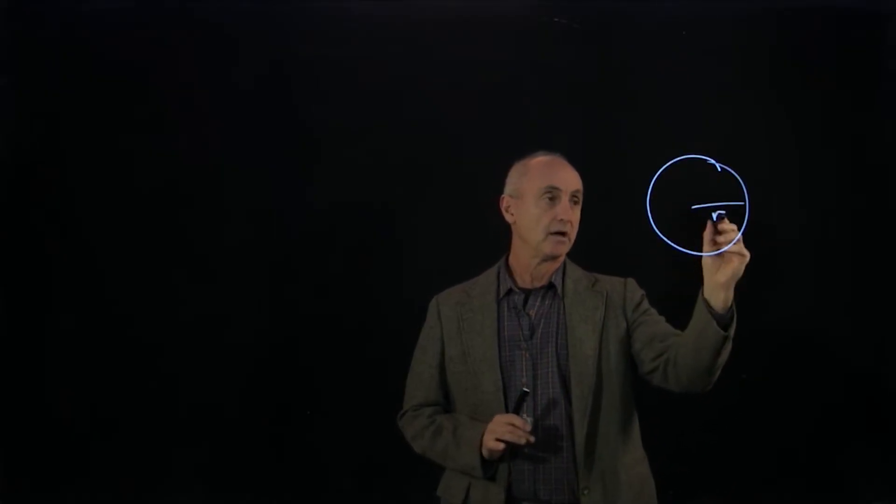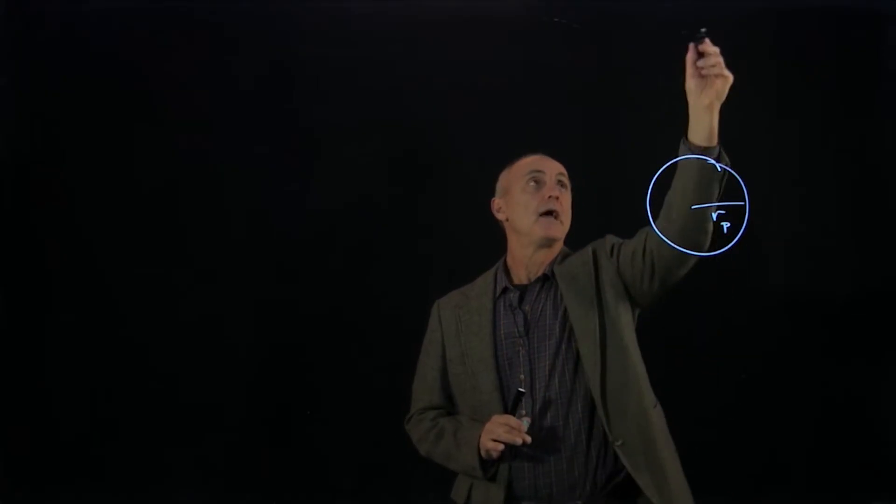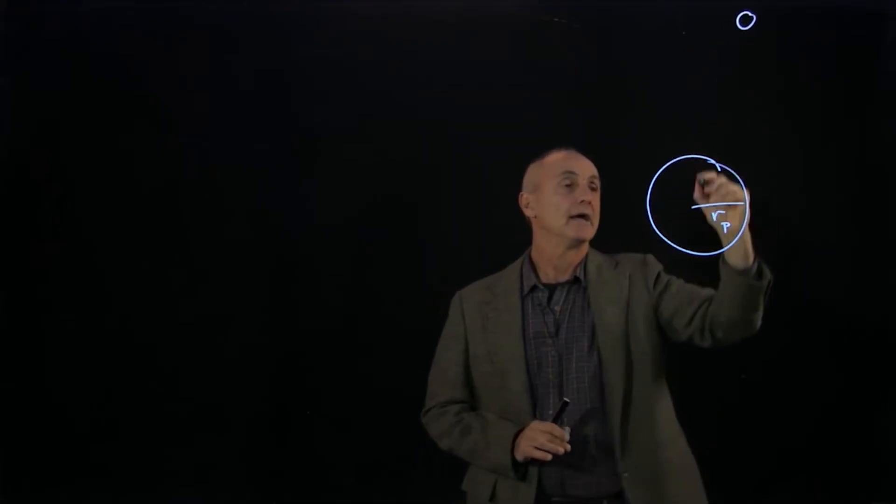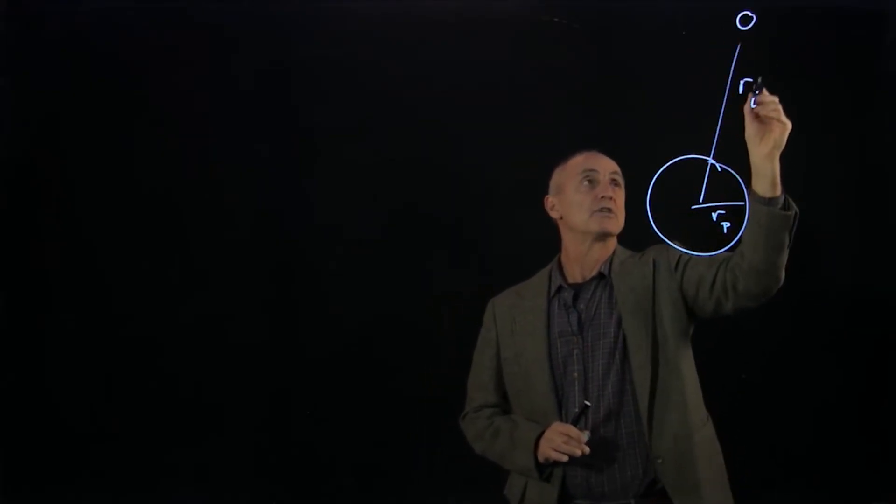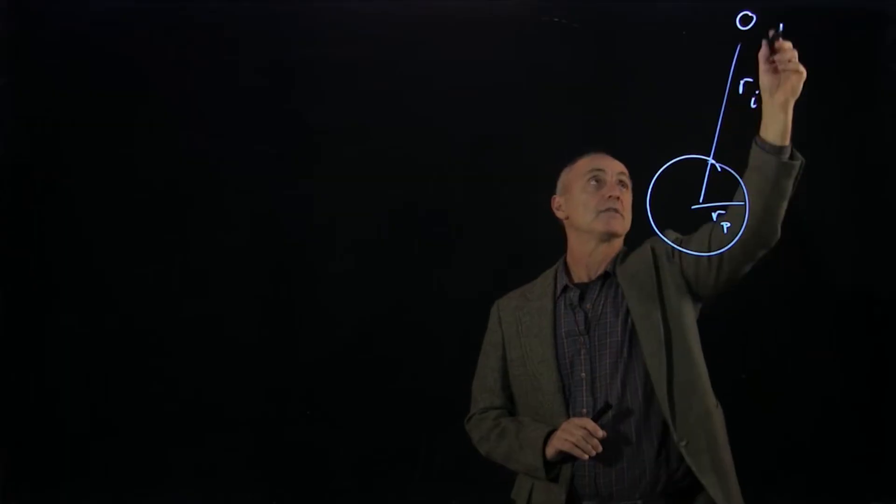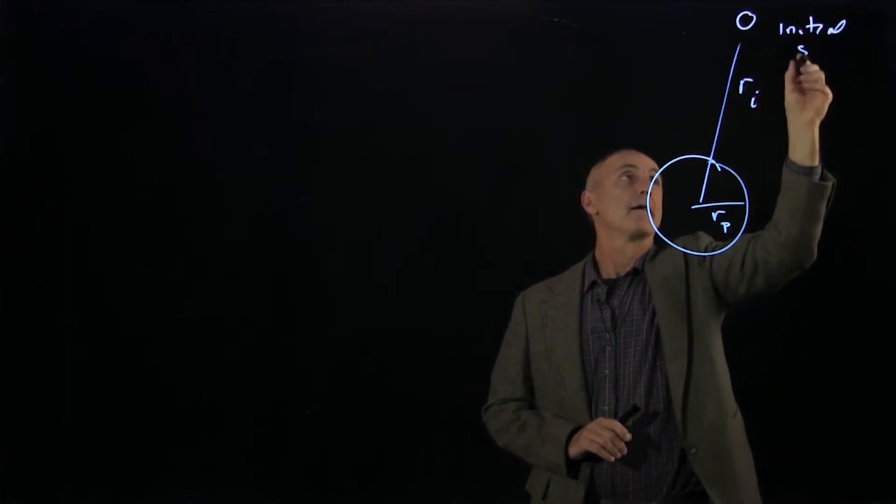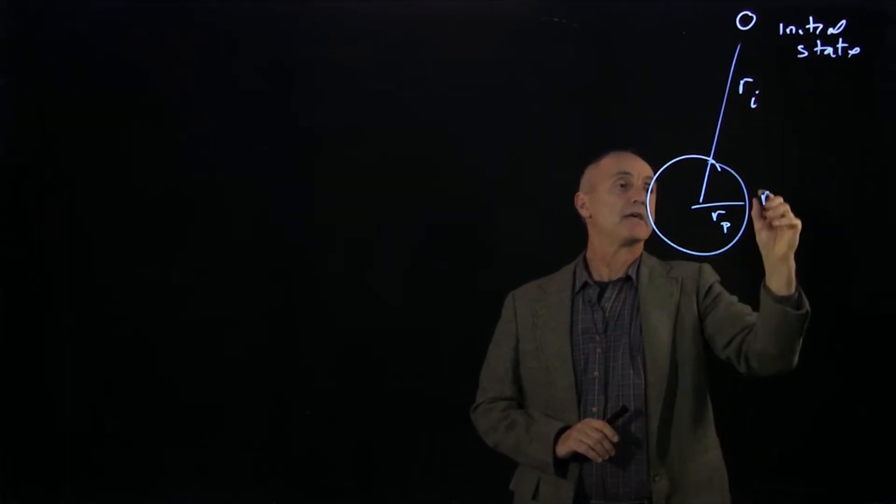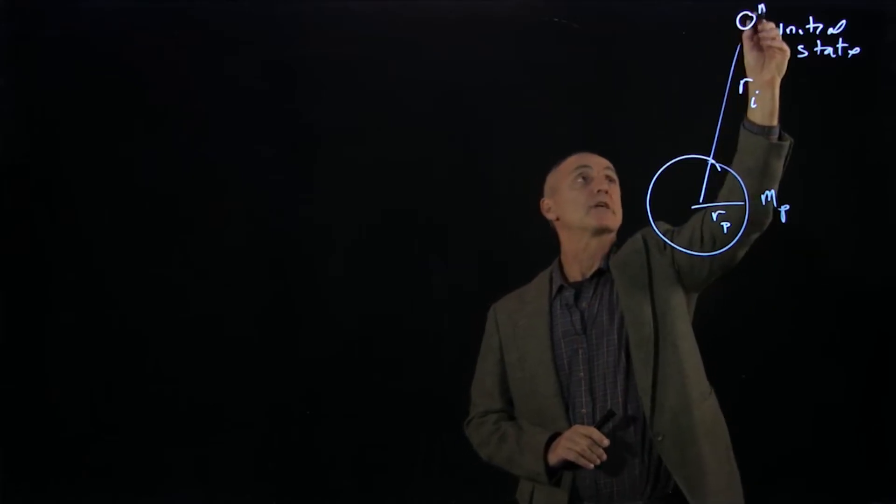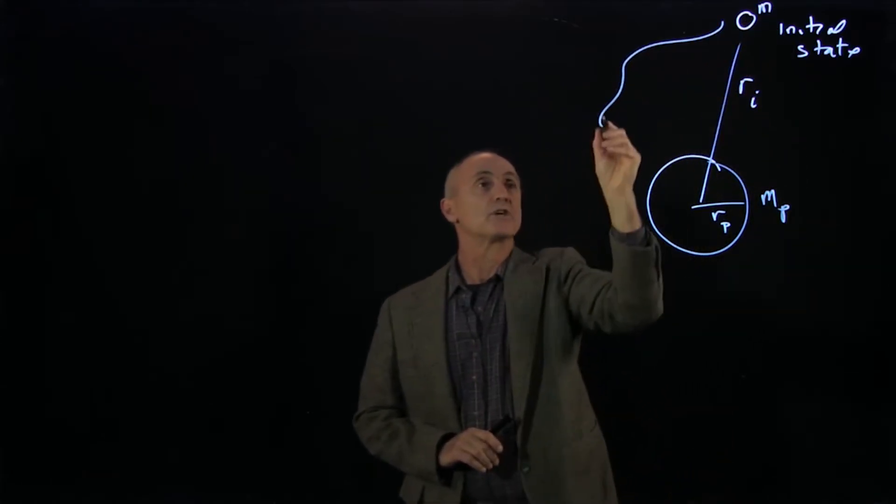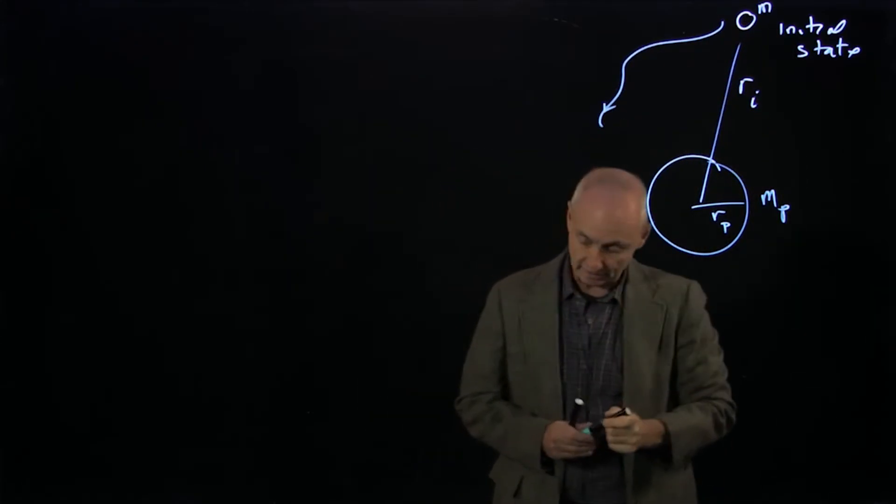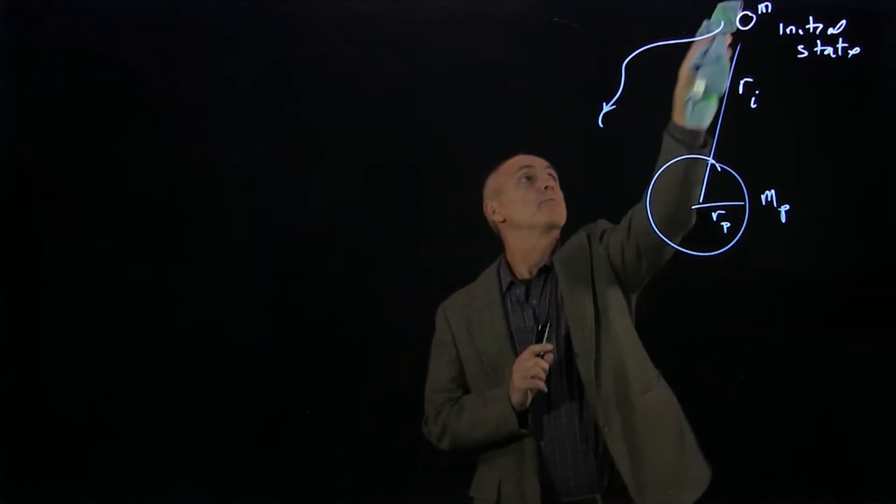Suppose we have a planet of radius rp, and we have a small object. Initially, our object is a distance r away from the planet. This is our initial state, and the planet has mass mp, and our small object has mass m. This object is moving. Of course, orbits really aren't like that, so we should be a little bit more careful.